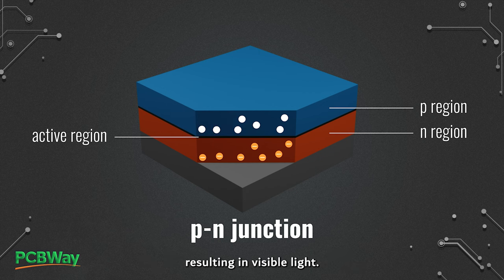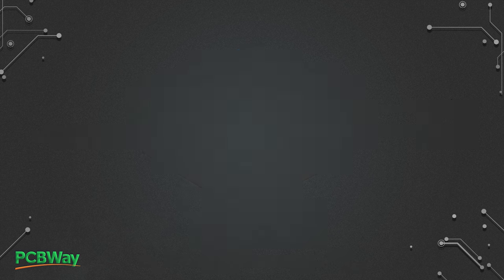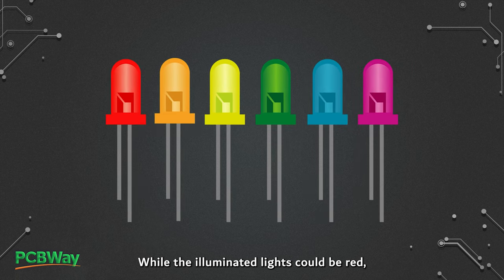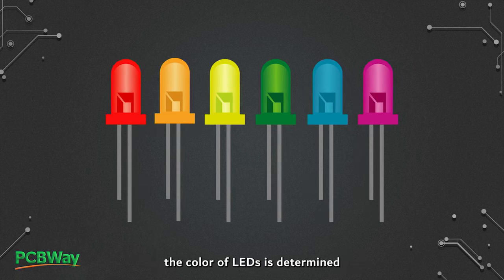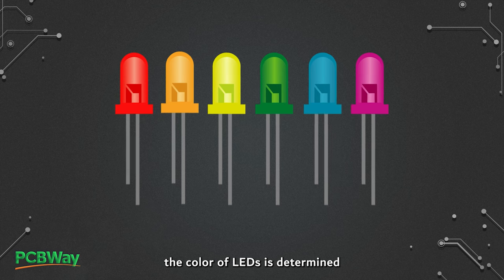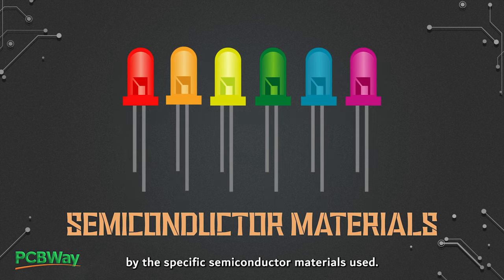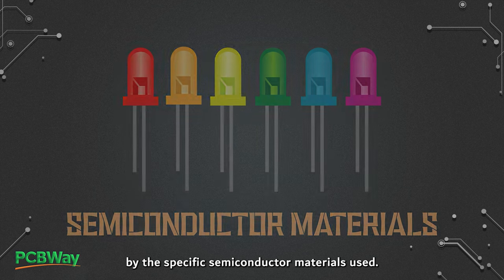This results in visible light. The illuminated light could be red, yellow, green, or white, and the color of LEDs is determined by the specific semiconductor materials used.